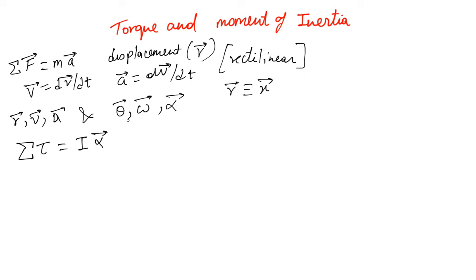Before we discuss anything else, we notice that we are now putting arrows on omega and alpha. We haven't done that so far. Why an arrow? Because this means they are vectors. Angular velocity is a vector, and similarly angular acceleration is a vector.